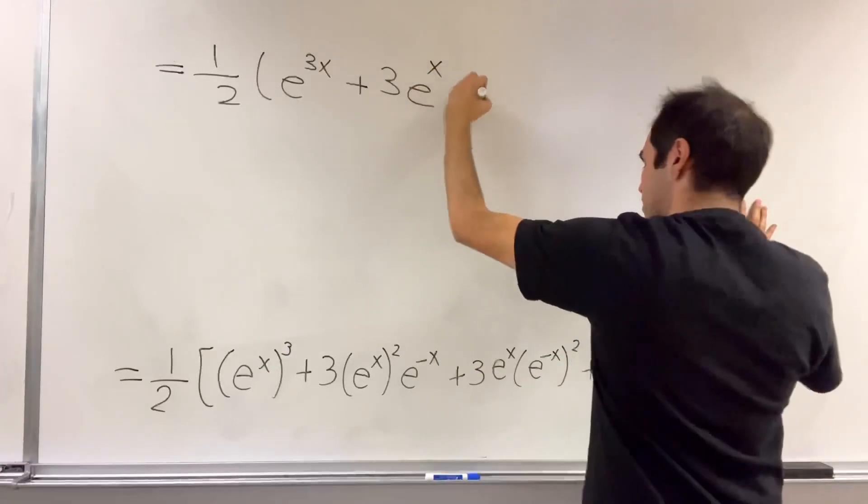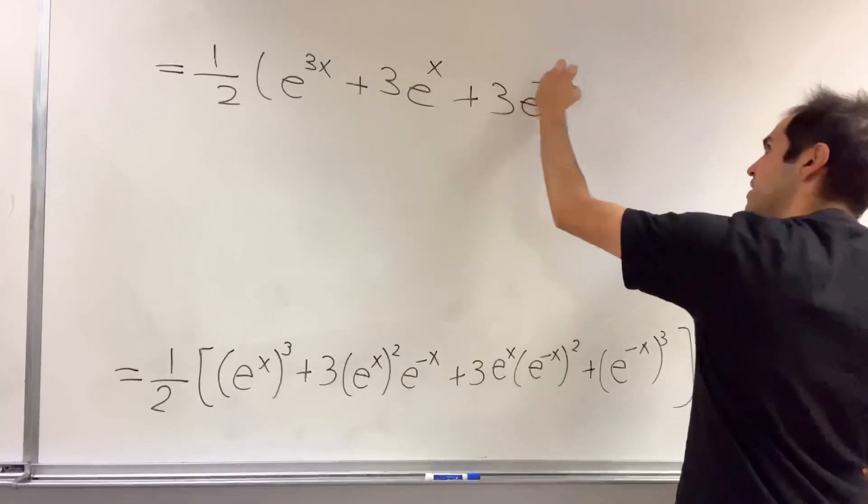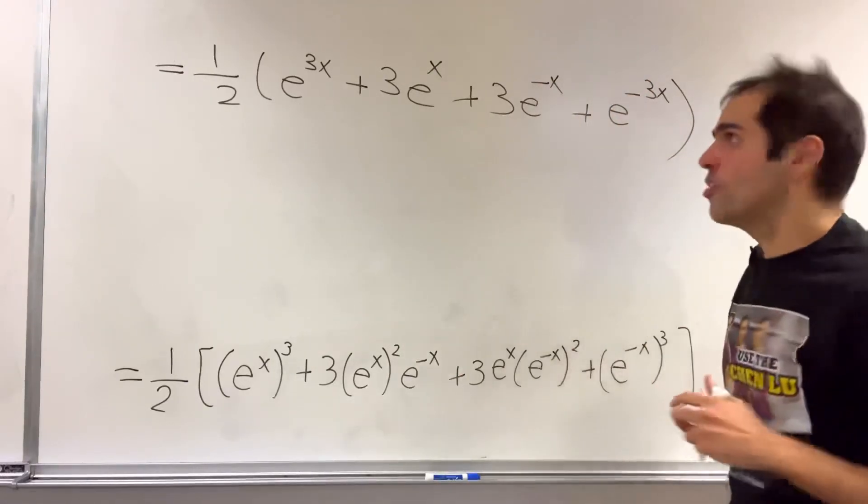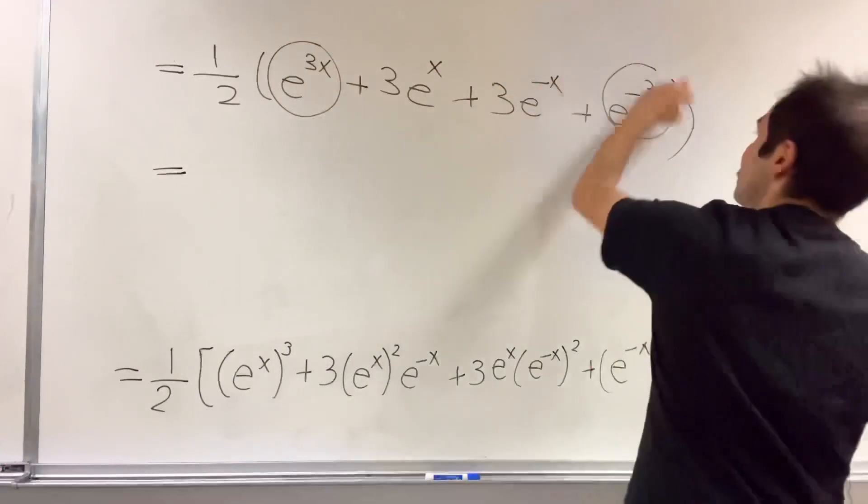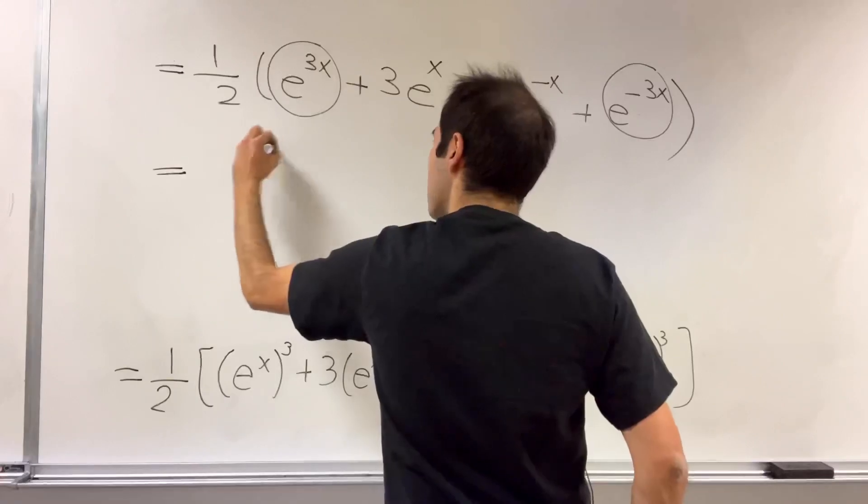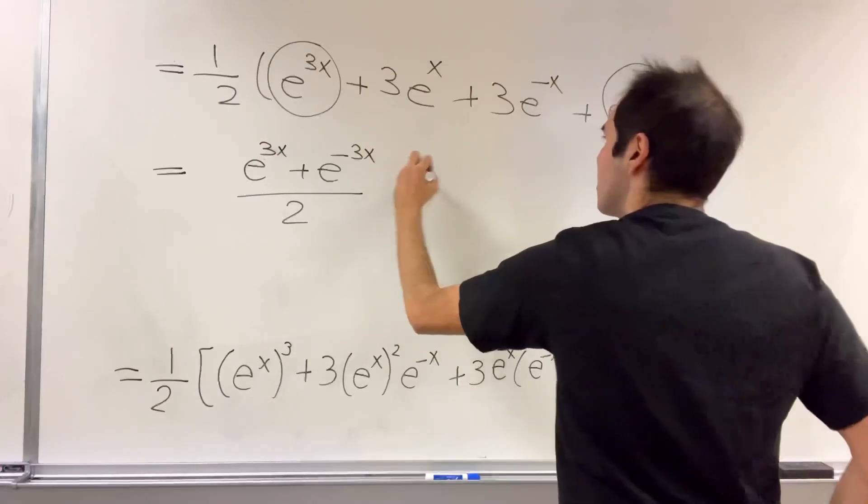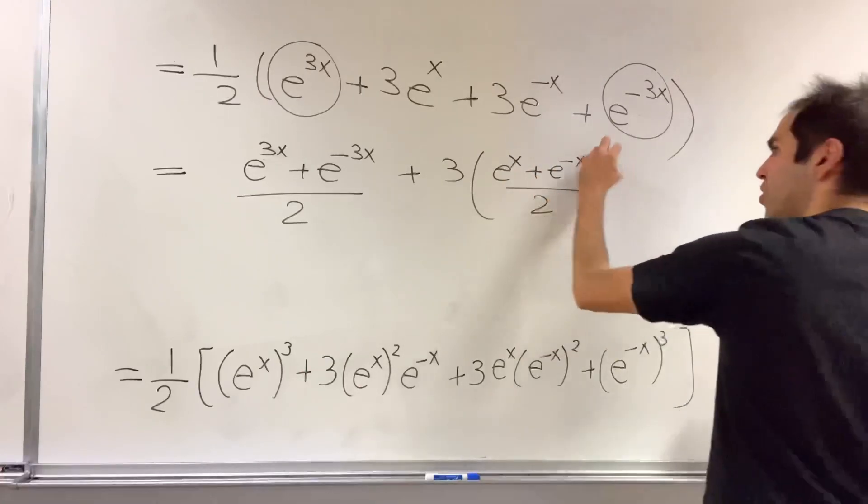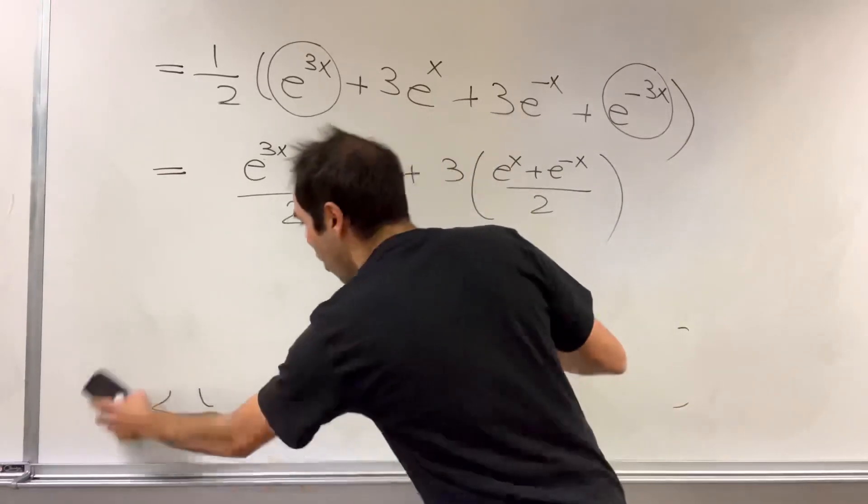And the new thing is, you can combine like terms. Because this is the same thing if you combine first and last term, you get e to the 3x plus e to the minus 3x over 2 and then plus 3 e to the x plus e to the minus x over 2. And you can now recognize this as cosh terms.